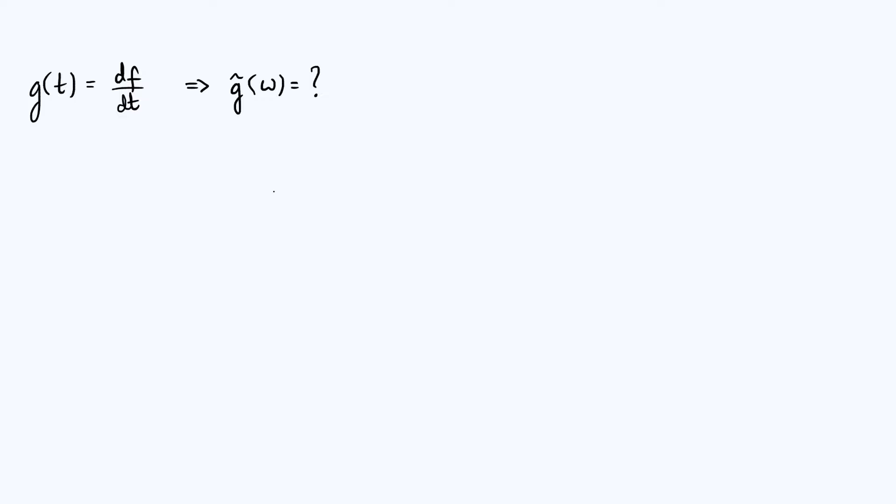Now since there are different conventions for Fourier transforms, let me just show you the definition that I use. So f tilde of omega is defined as the integral overall time of f of t times e to the minus i omega t.